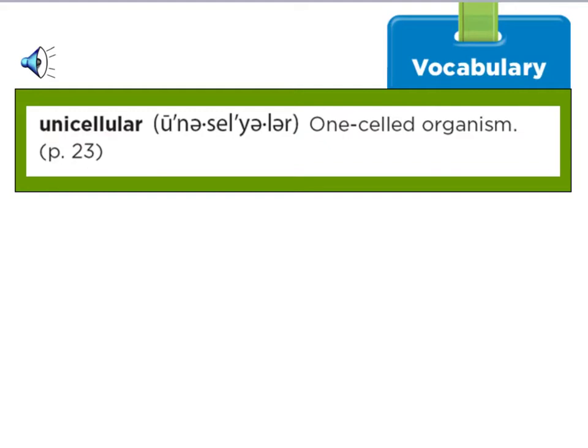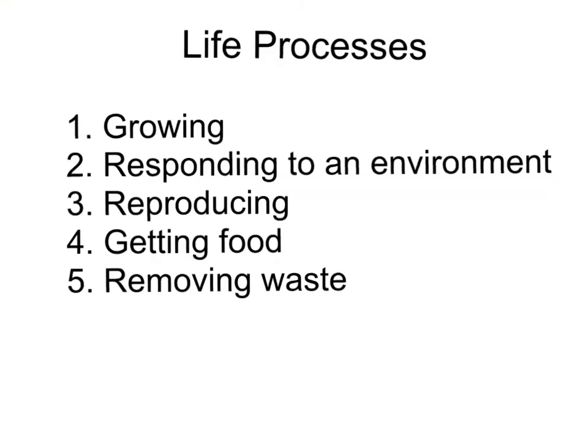What are life processes? How do you know that something's alive? The basic life processes are these: you have to be able to grow; you have to be able to respond to your environment — when it's hot, cold, or raining, you know it and react accordingly; you have to be able to reproduce and have offspring; you have to be able to get food, because you need energy to live; and you also need to be able to get rid of your waste — sweat, go to the bathroom. That's what makes you considered to be alive.